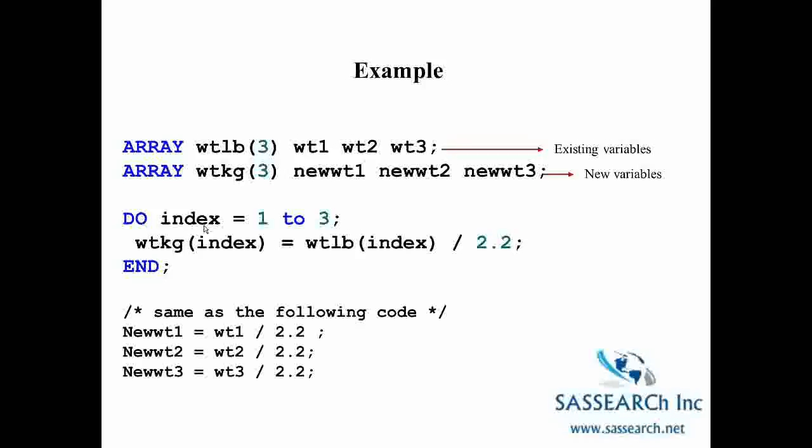and assign it the value of the first variable in the array weight pound, which is variable weight one, divided by two point two.